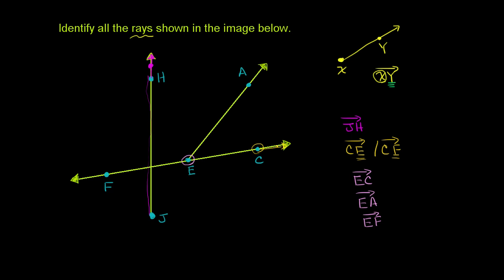From point f, you might be tempted to go left, but there's no other point to specify that direction. Going right, you have ray f,e — start at f, go through e, and keep on going. You might also say ray f,c, but that's the same as f,e, because c lies on ray f,e and e lies on ray f,c. So these are the same ray.